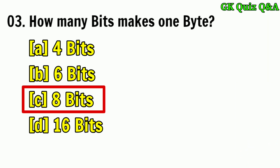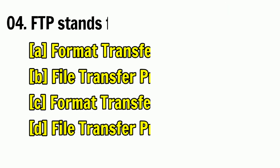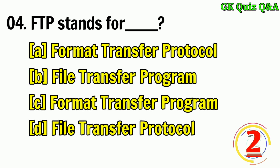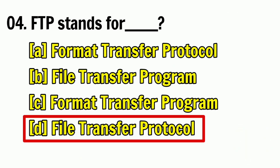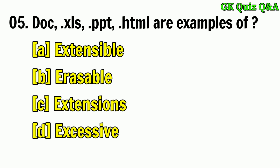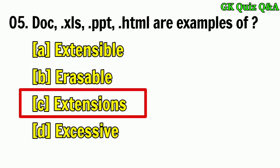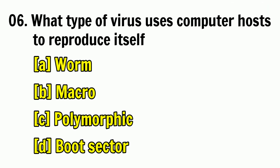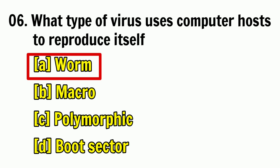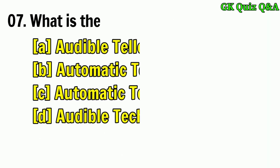Answer C — eight bits. FTP stands for — answer D — file transfer protocol. Doc, Excel, PPT, HTML are examples of — answer C — extensions. What type of virus uses a computer host to reproduce itself? Answer A — worm.